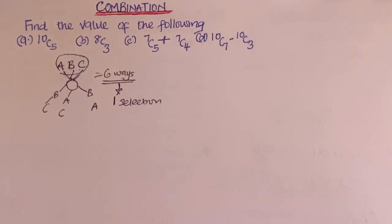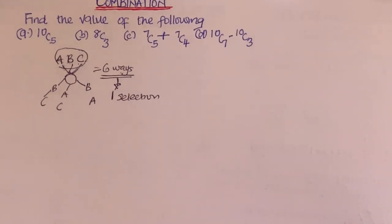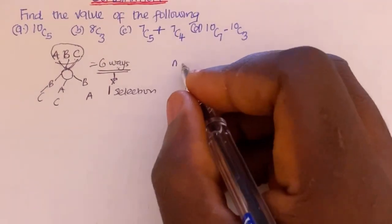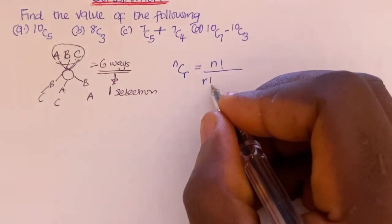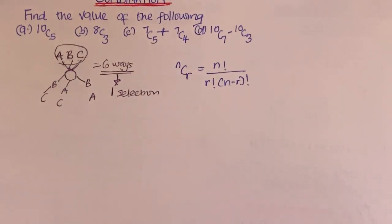That single selection is what we call a combination. So whenever you are given different items and asked to find the number of ways to arrange them — say you get 120 ways — that 120 is taken as one selection of those items. The general formula is: nCr = n! divided by (r! × (n − r)!).